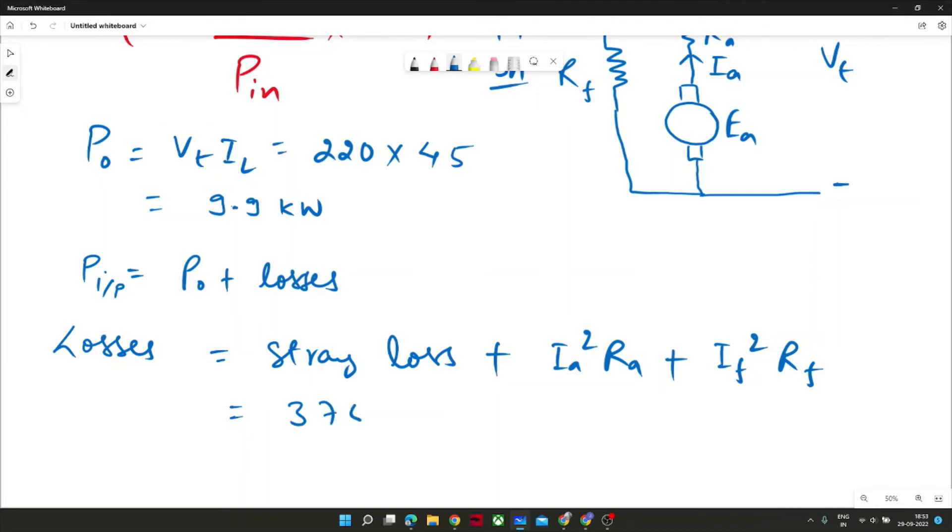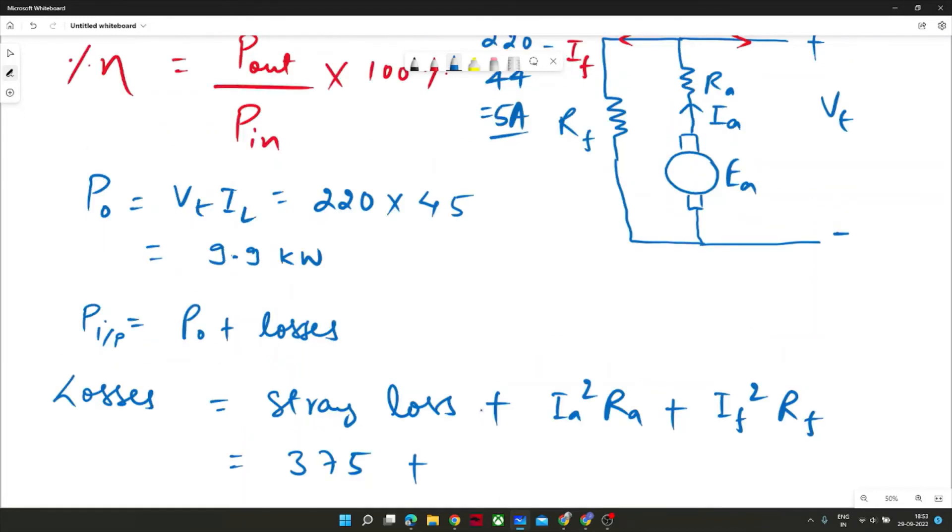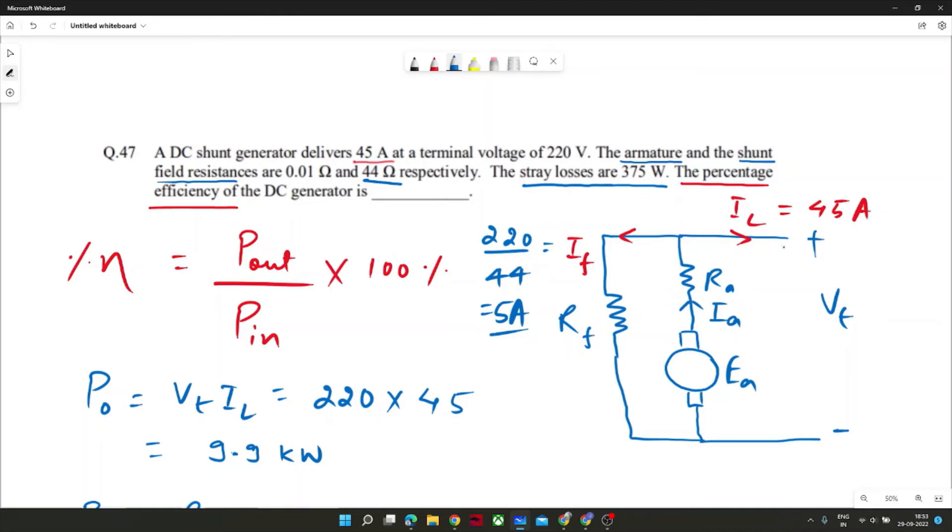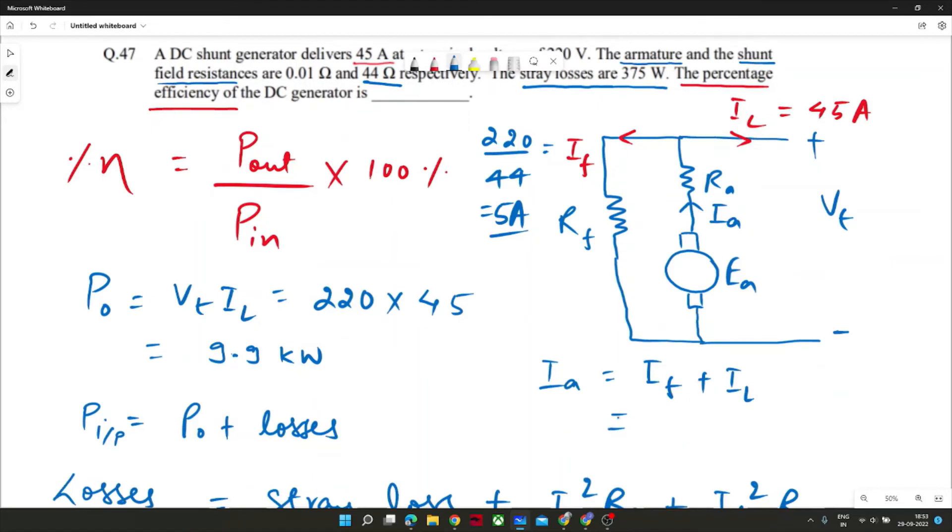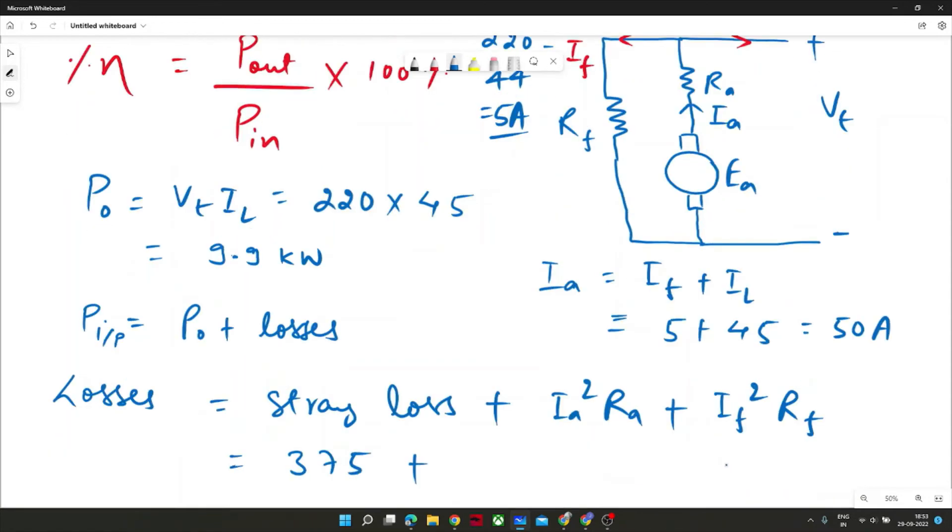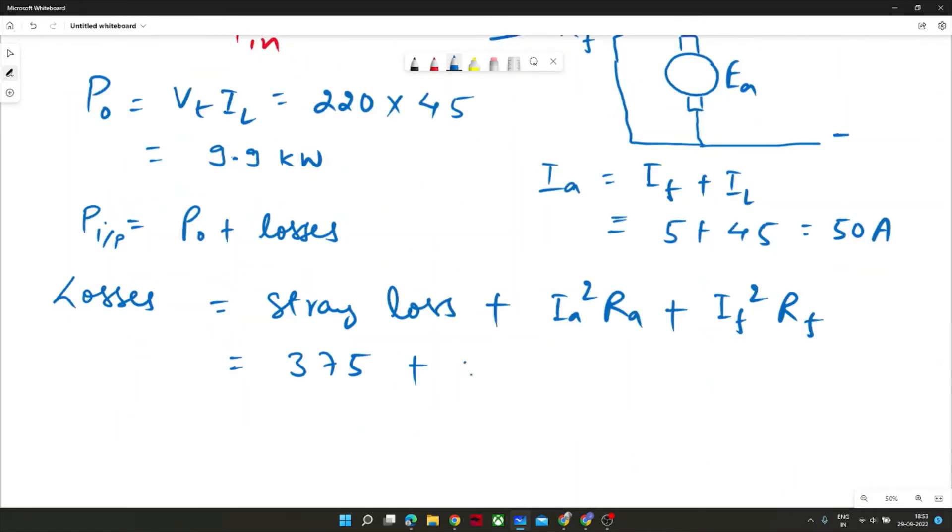So straightforward, 375 plus Ia. Ia will be sum of If plus Il. So Ia is If plus Il. Once you draw the circuit it will be very easy to identify all the component of armature, field, or line. It doesn't matter. So it would be 5 plus 45, that would be 50 ampere.